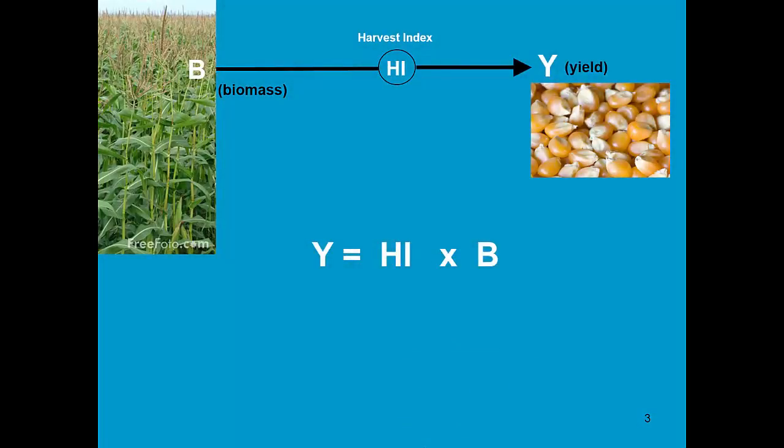Crop yield is obtained from the biomass production, and it is considered a fraction of the total production of biomass during the season. This fraction is called the harvest index.